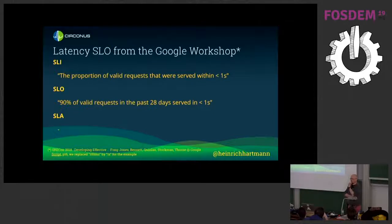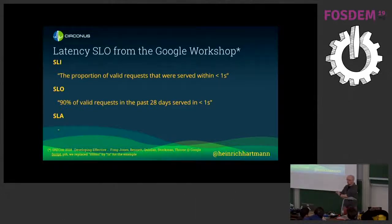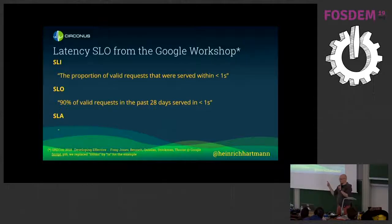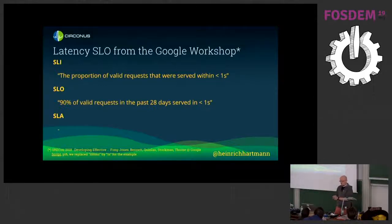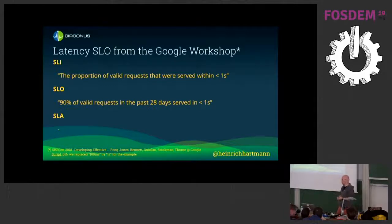Here's a latency SLO example used at the SREcon workshop I attended last year. The SLI was the proportion of wallet requests served within one second — a metric computed every minute. The SLO was: 90% of wallet requests in the past 28 days were served within one second. You'll recognize those kinds of questions from the very start — this is basically the same thing I asked you, now framed as a percentage.